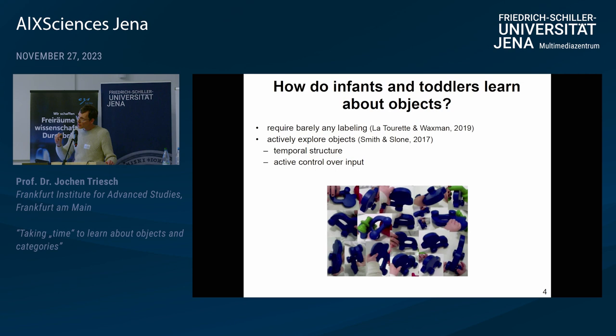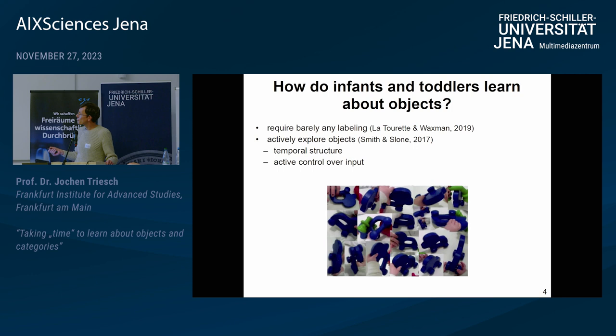Now I want to give you a snippet of research that we do in one particular domain area, which is how to learn about objects and categories of objects and how to recognize them. How do infants and toddlers actually learn about objects? They require barely any labeling, but they actively explore objects. They take them in their hands, manipulate them, or move with their body around objects to see them from many perspectives. That gives them access to temporal structure — time is very important here — and active control over the input, rather than having a big database and sampling IID samples from it.